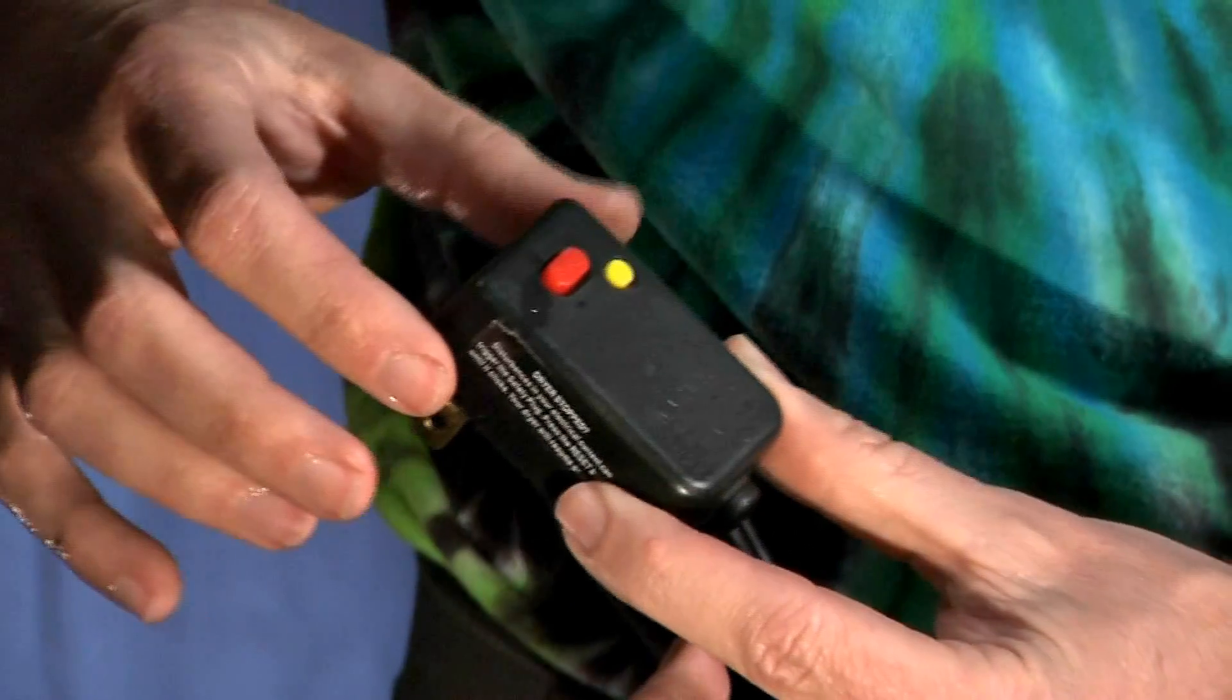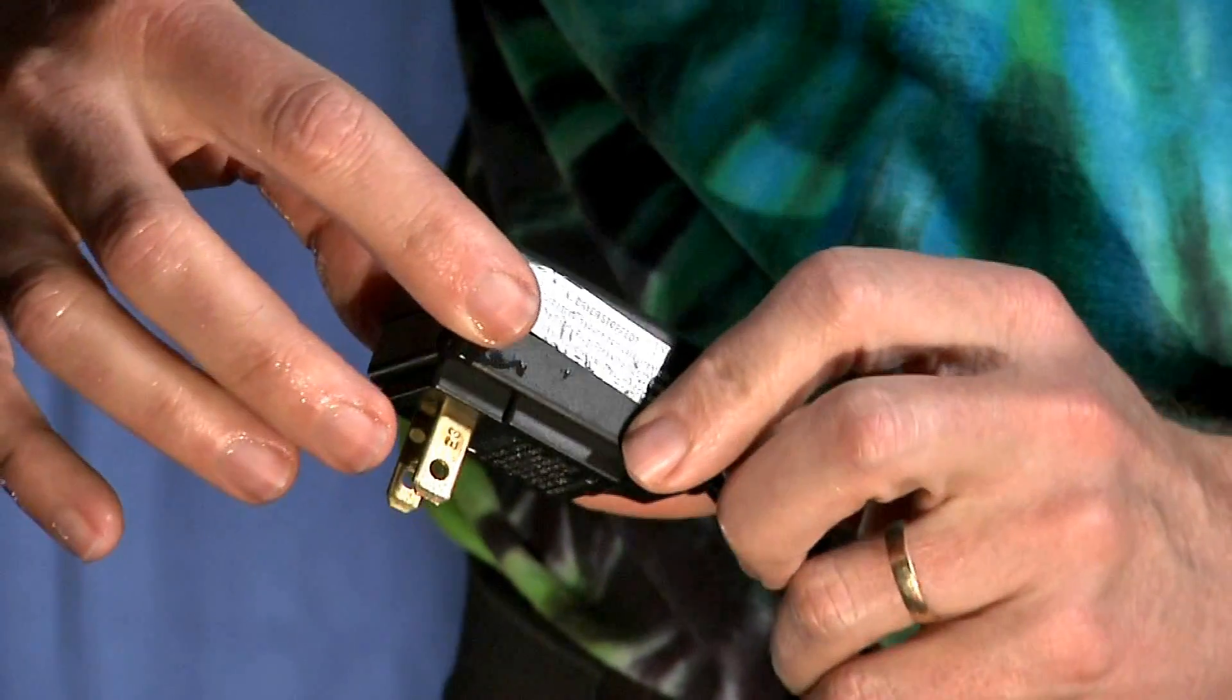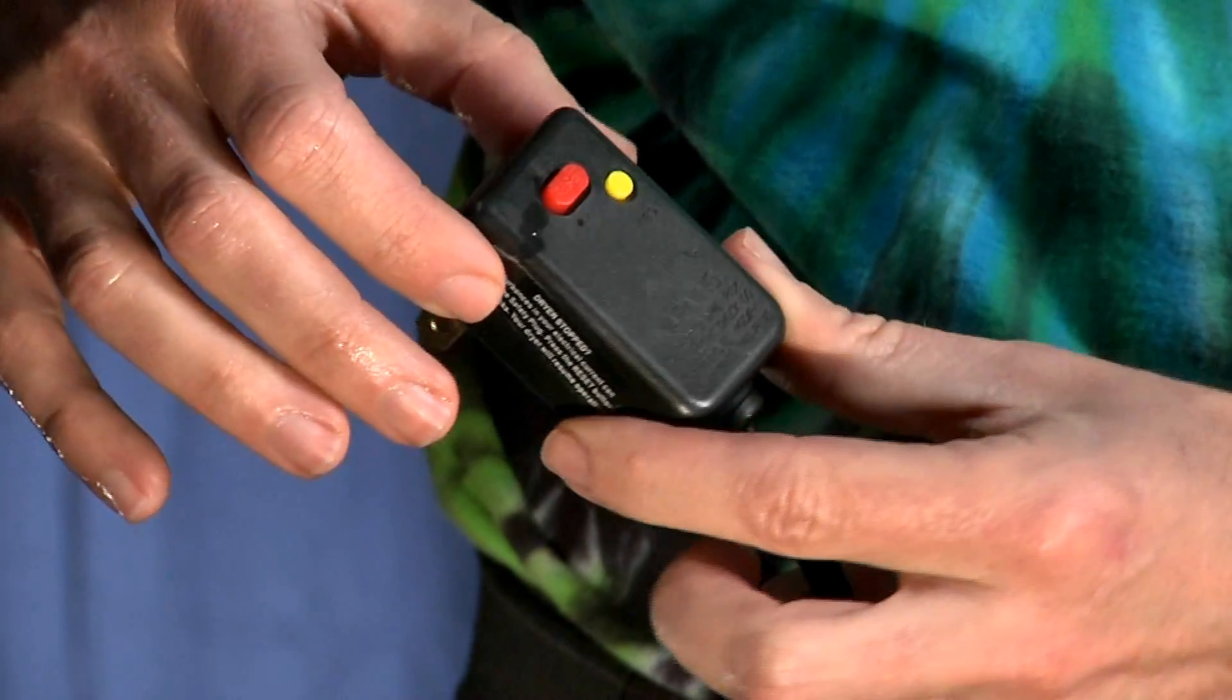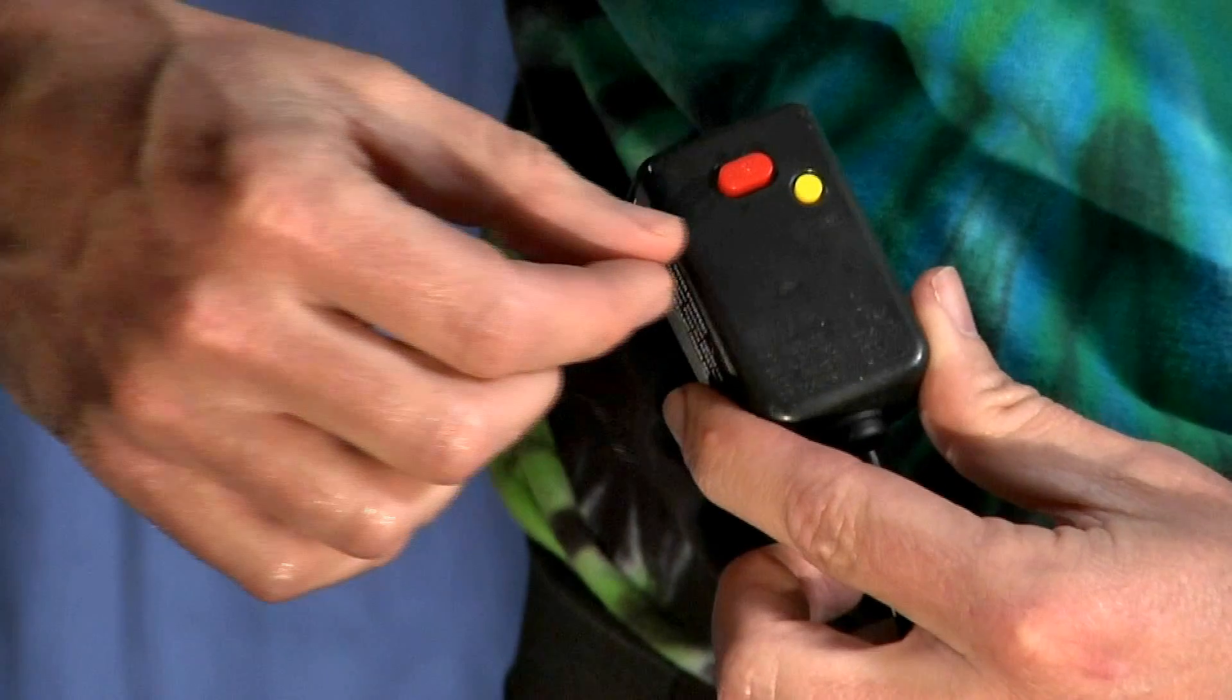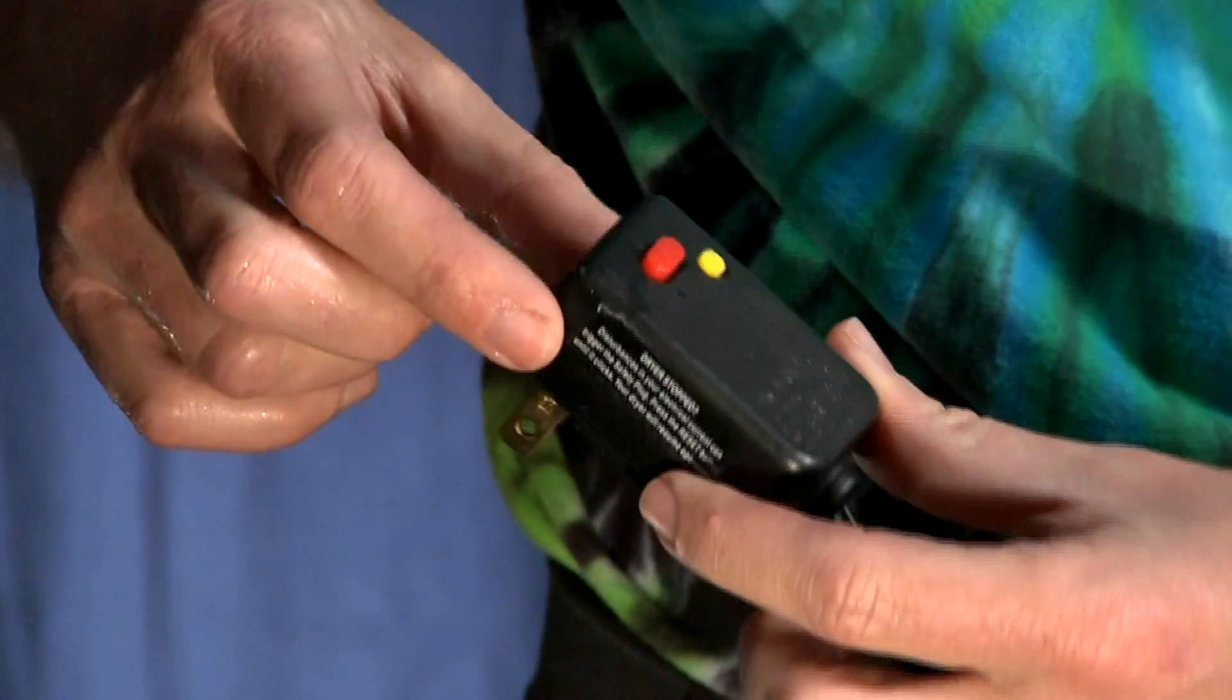The ground fault interrupter or GFI outlet is the most important part of this experiment. When it senses a potentially dangerous situation, it will immediately shut off all electricity.